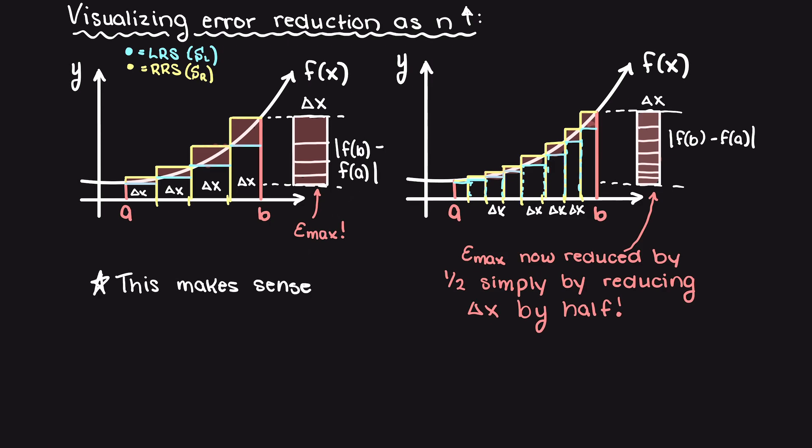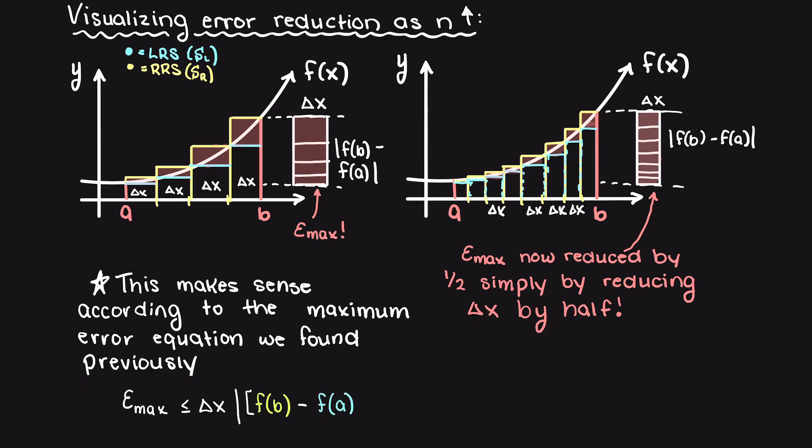This agrees with our previous maximum error equation as you can see they are equivalent, and how our delta x is indifferent to the sign of f(b) minus f(a).